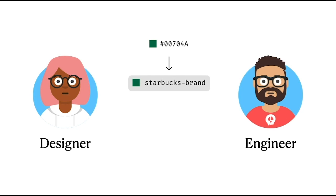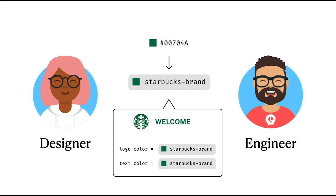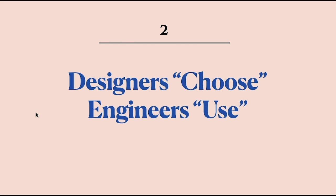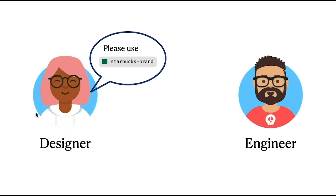Wouldn't it be great if you could just call the value 'Starbucks brand' and not worry about updates to the color at all? That's what design tokens are. Design tokens separate the concerns of using the color and choosing the color — and of course, not limited to color, but applies to any style values. Designers choose and engineers use.